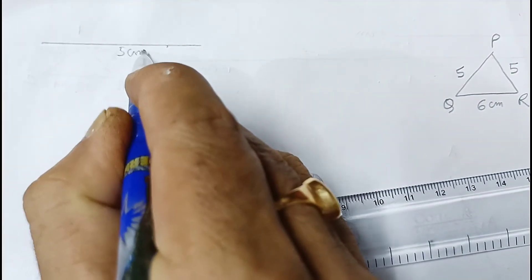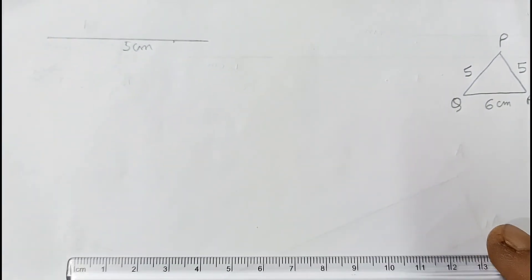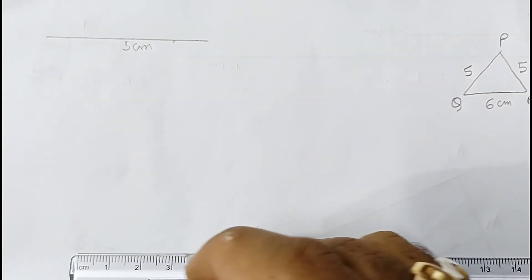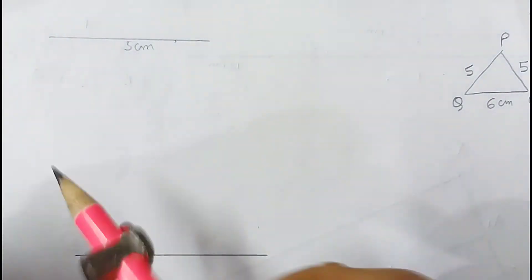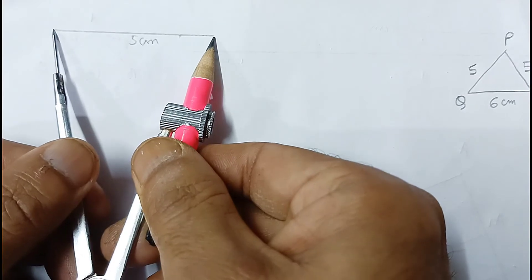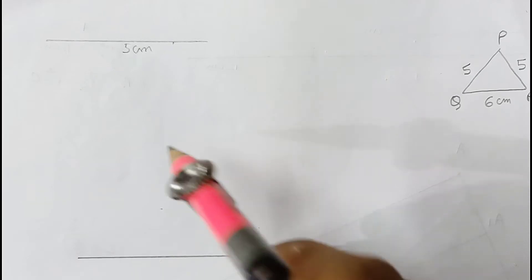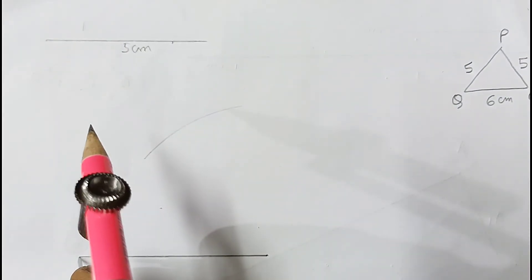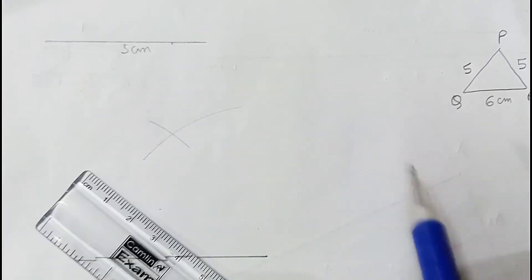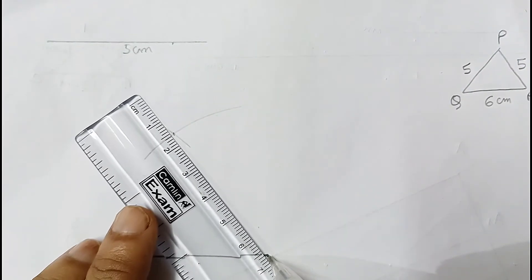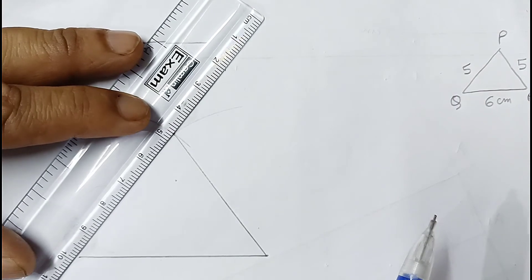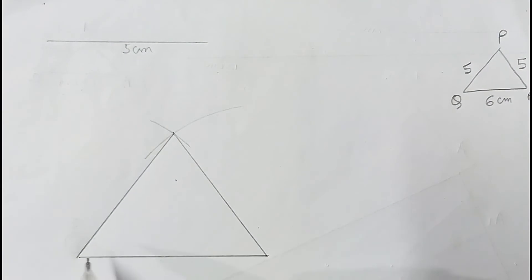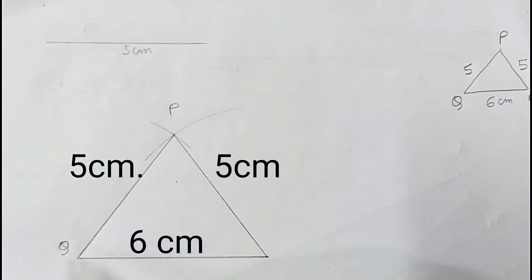Drawing a line segment of 5 cm, then a base of 6 cm. Measuring 5 cm and drawing two arcs — one from each end of the base — and joining the intersection point with both endpoints gives triangle PQR, where P is the apex, Q and R are the base vertices, QR = 6 cm, and PQ = PR = 5 cm.